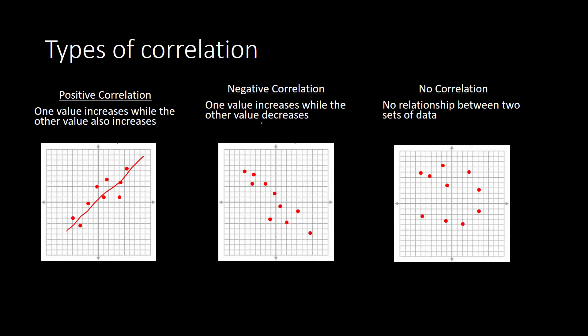Negative correlation is where one value increases while the other value decreases. This is comparable to inverse variation, and we see that the points go downward — that's negative slope. So if the points create a negative slope, there's negative correlation; if positive slope, positive correlation. No correlation means no relationship between the two sets of data — there seems to be no pattern, just a bunch of random points.